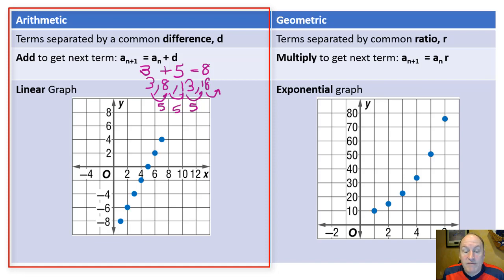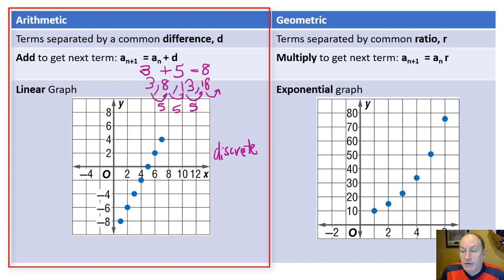On a graph, an arithmetic sequence looks like points on a line. It is a set of discrete individual points — not continuous like a line — but it does have a linear sort of shape.